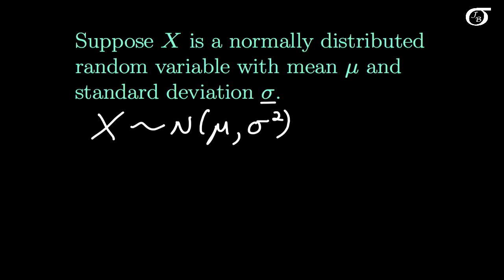Now suppose we want to standardize this — in other words, turn it into something that has a standard normal distribution, which is a normal distribution with a mean of 0 and a standard deviation of 1. X has a mean of mu, so if we compute X minus mu, that quantity will have a mean of 0. And if we divide by sigma, the whole quantity will have a standard deviation of 1. This is a basic linear transformation that forces the quantity to have a mean of 0 and a standard deviation of 1.